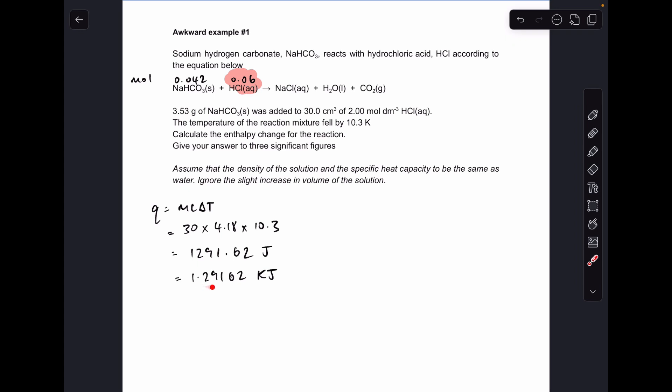So to get the enthalpy change for the reaction, we just take the kilojoules, divide by the moles and we're getting plus endothermic, the temperature of the mixture fell. So plus 30.8 kilojoules per mole to three significant figures.